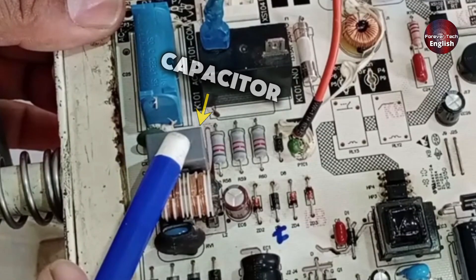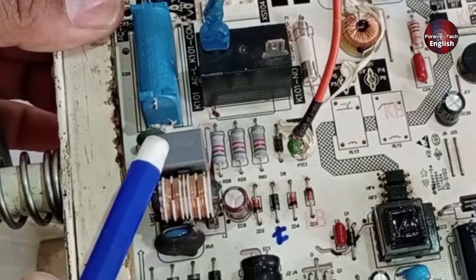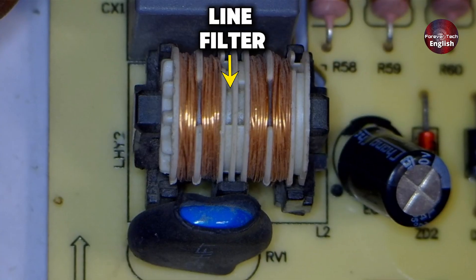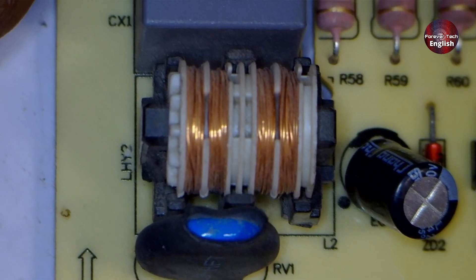Then there's a capacitor here, which is installed to absorb any kind of spikes. After that, a line filter is installed to filter further electrical noise.